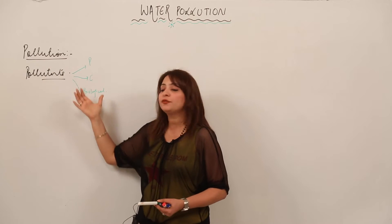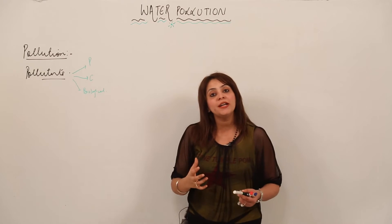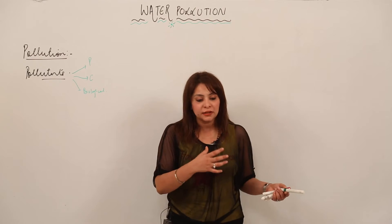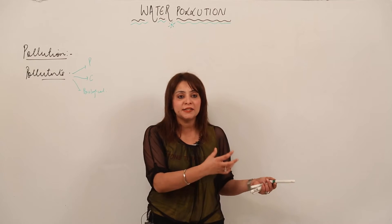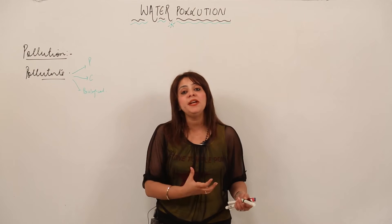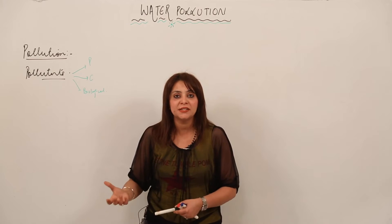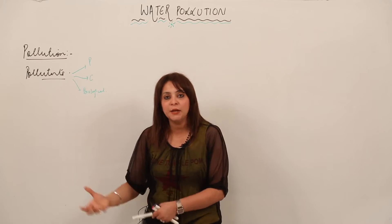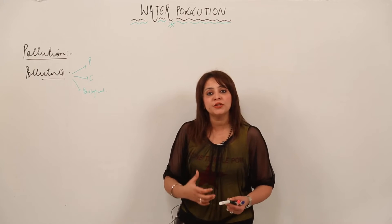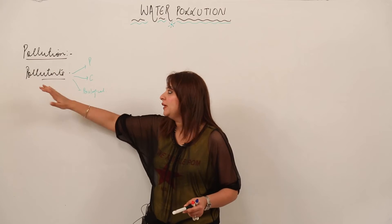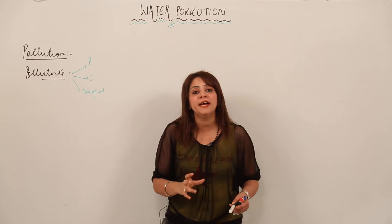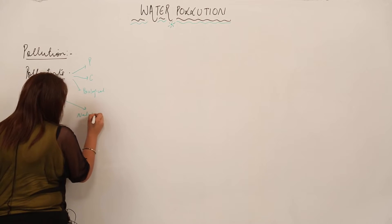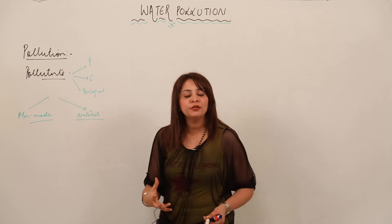What are the sources from which these pollutants actually come? These sources can be natural, because there are certain natural activities which lead to the release of undesirable substances. It can also be man-made, caused by human activities. So the sources of pollutants can be natural and can also be man-made activities.